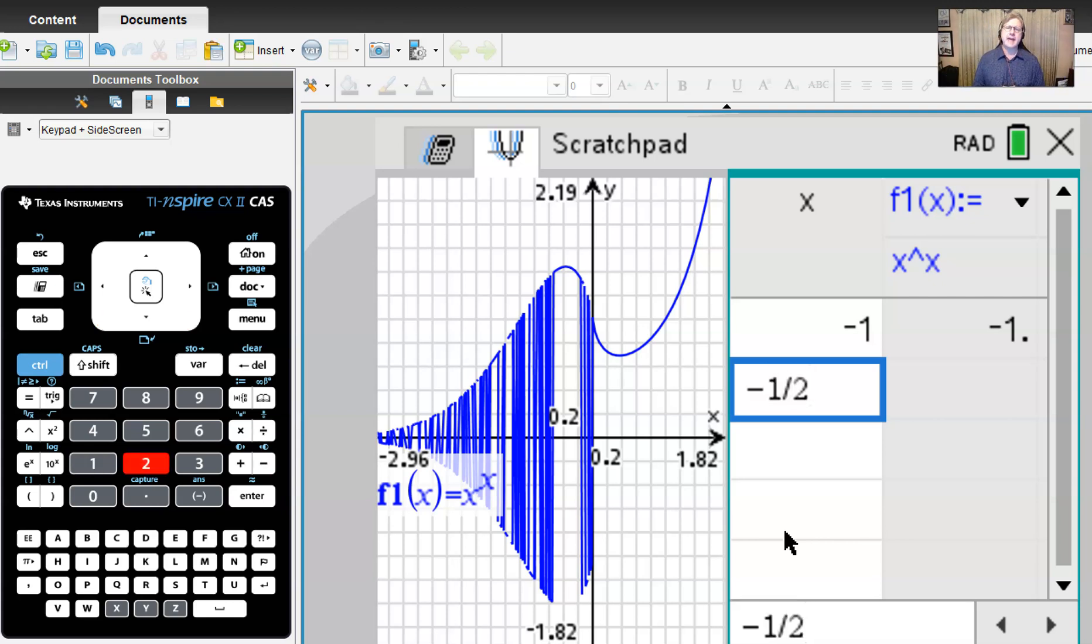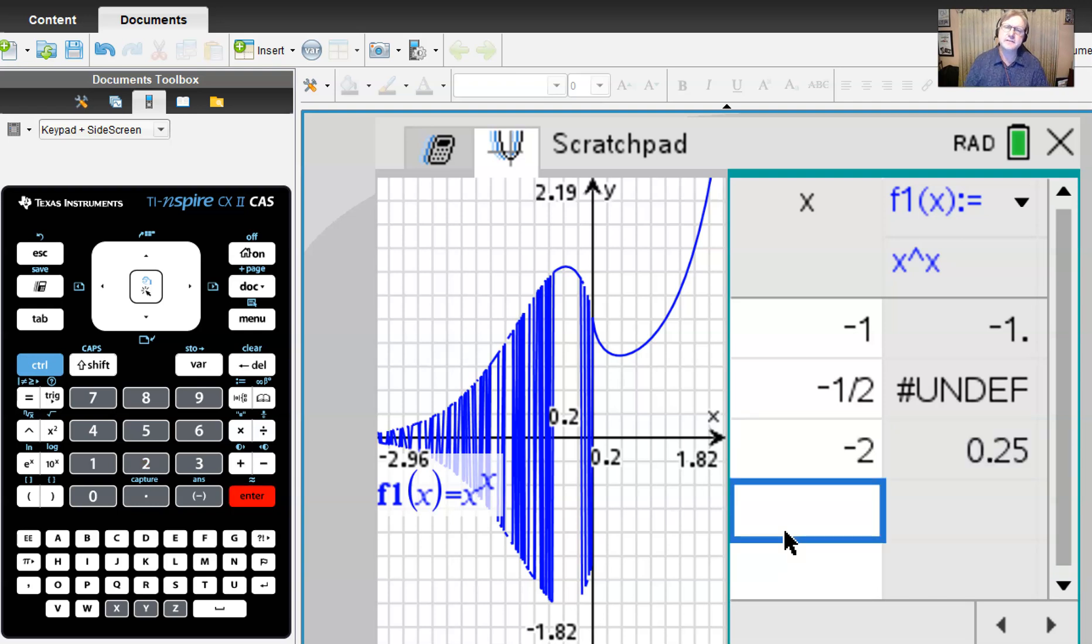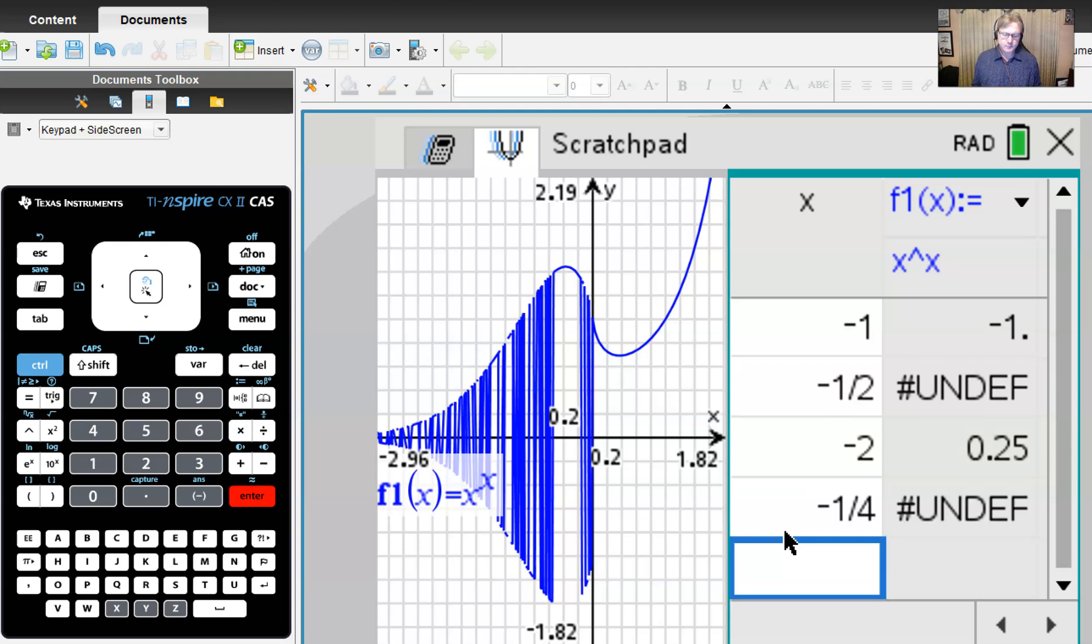But what if we found a fraction? What if I was interested in, say, negative one half? I'm going to enter the one half using the diagonal fraction bar and the calculator will understand it. It does give us an undefined. But if I were to keep going into the negative realm like negative two, I'm back to having a defined value. So we have to think about what kind of values would make this graph undefined.